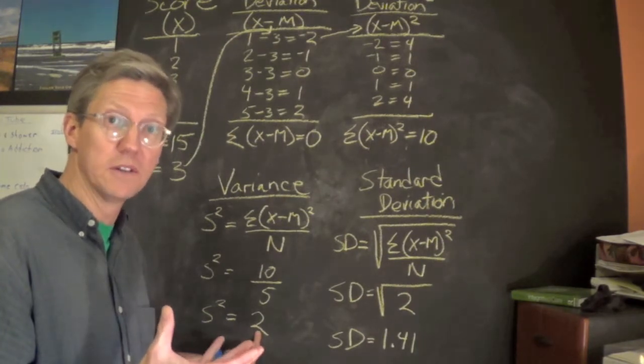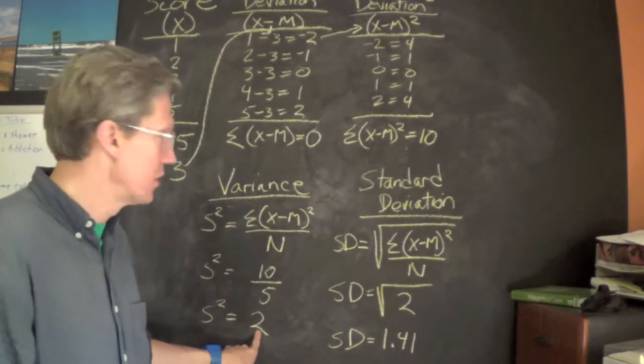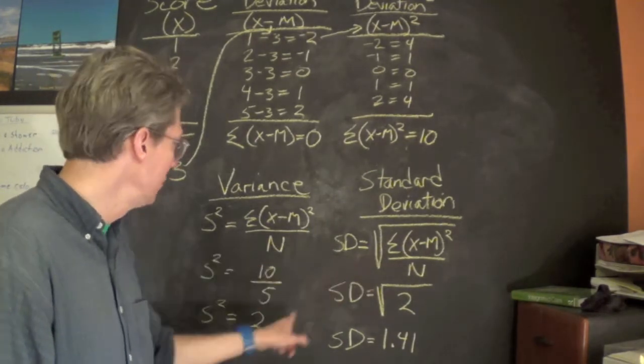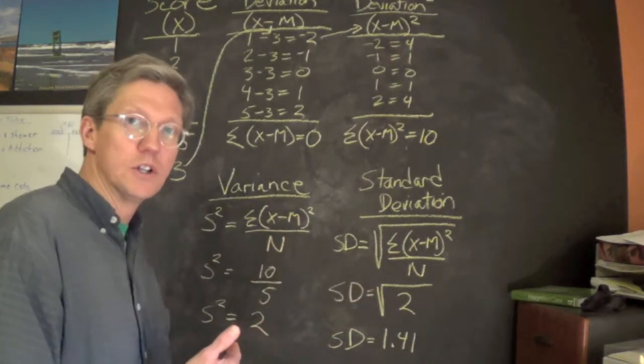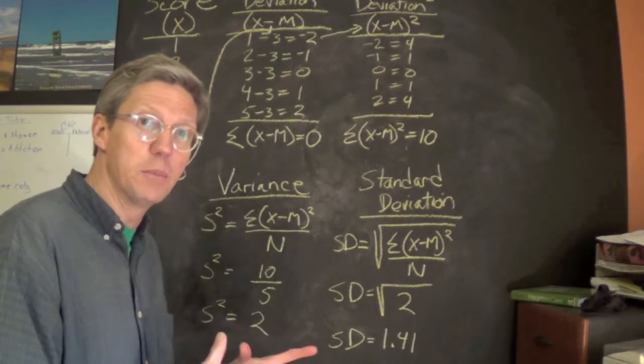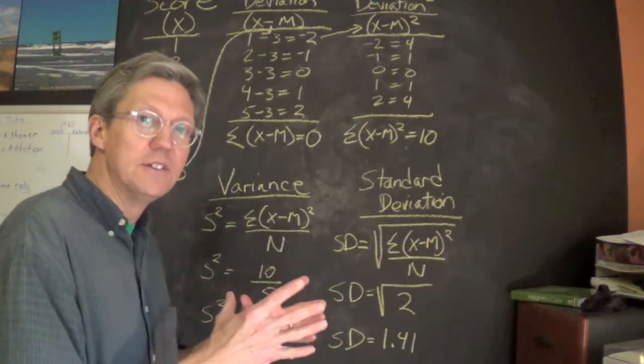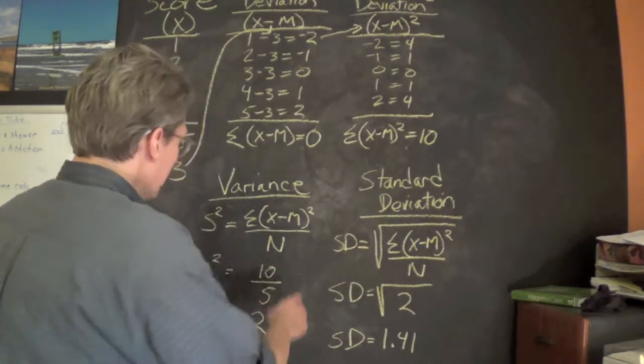We can simply correct that by taking the square root of this number. By taking the square root of the variance, we come back to the original measurement units so that we can then talk about our standard deviation from the mean. That's all we do.